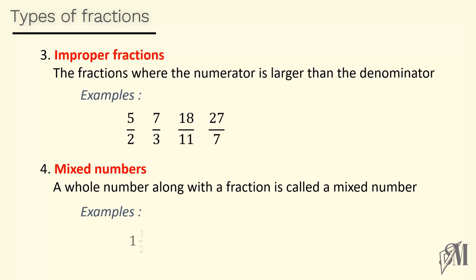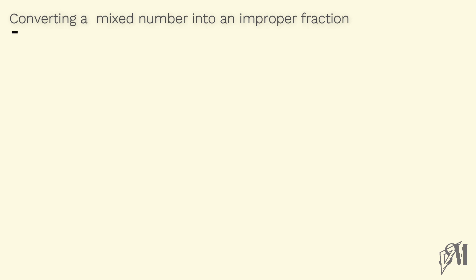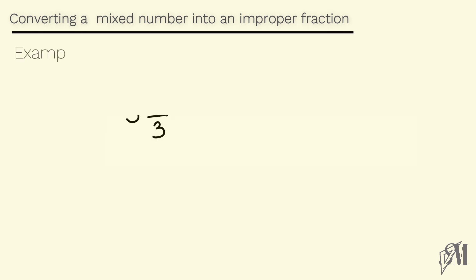The last type of fractions is mixed numbers. A whole number along with a fraction is called a mixed number. One is a whole number and half is a fraction, so one and a half is a mixed number. Now let's see how to convert a mixed number to an improper fraction.